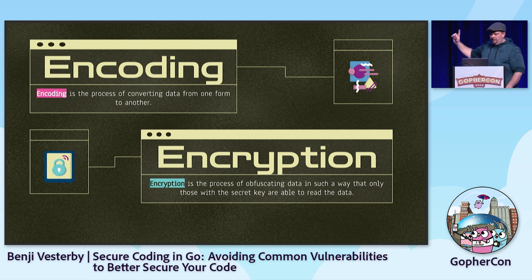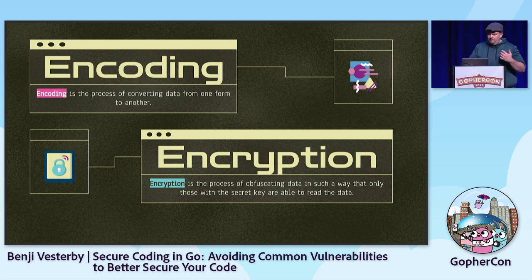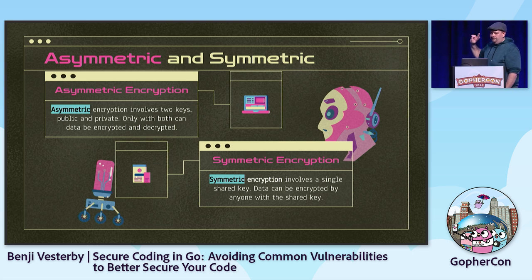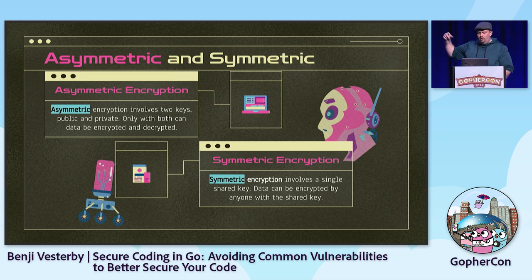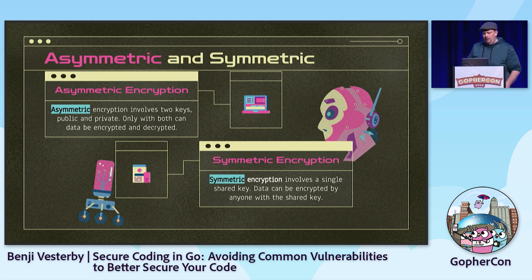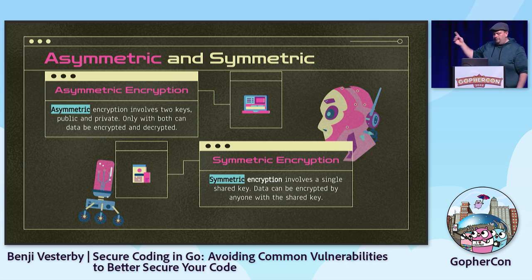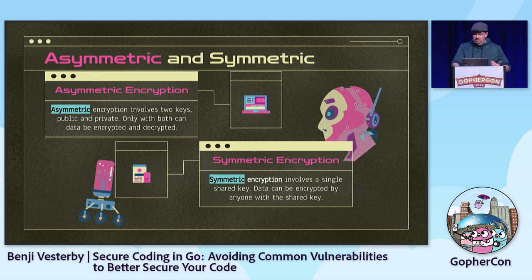Encryption is actually protecting cleartext data by obfuscating it as ciphertext. There are two primary methods: asymmetric encryption and symmetric encryption — and you use both every day. Asymmetric encryption uses a public and private key pair, like SSH keys — you give GitHub your public key, not your private key. Symmetric encryption uses a single shared key: one key encrypts the data and you need the same key to decrypt it.